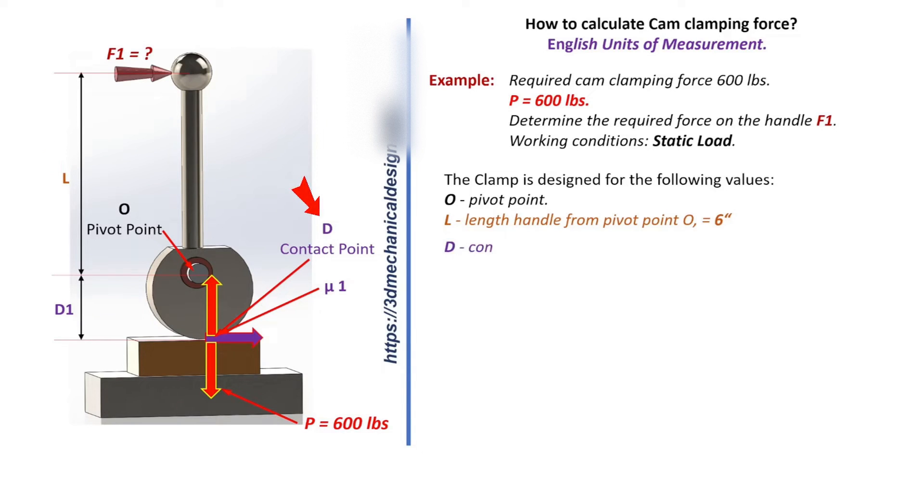D - Contact Point, Point of Contact D1 = 0.84 inch, distance from contact point to pivot point vertically.